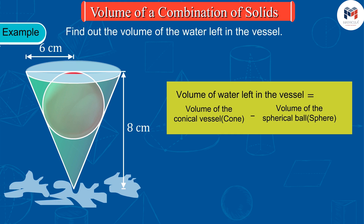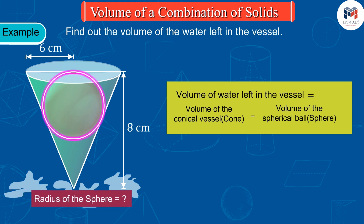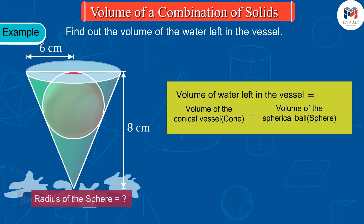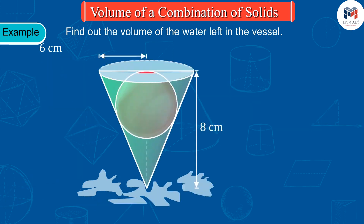Now we have to find out the volume of the cone and the sphere. From the figure, the values of the radius and height of the cone are known to us, but the value of the radius of the sphere is not known, which we have to find out. Let the radius of the sphere be s.